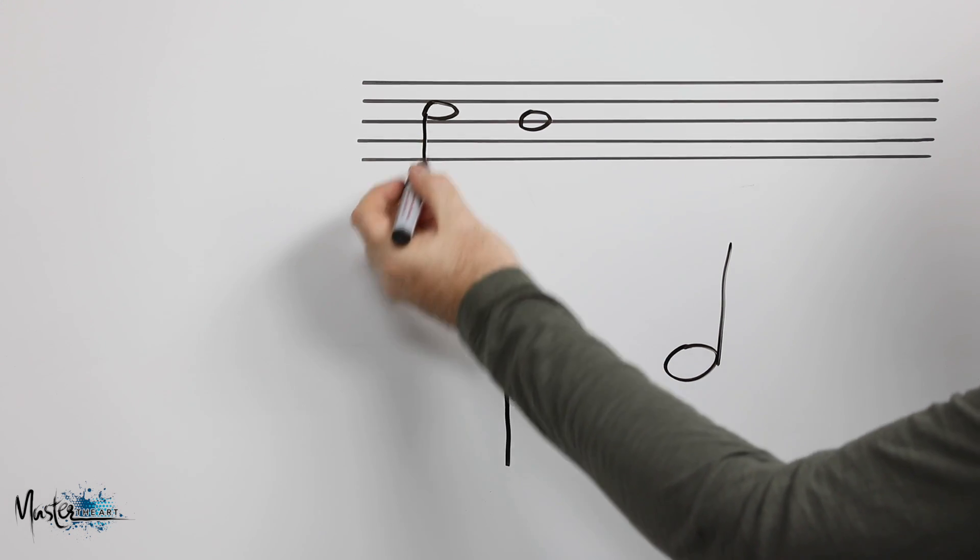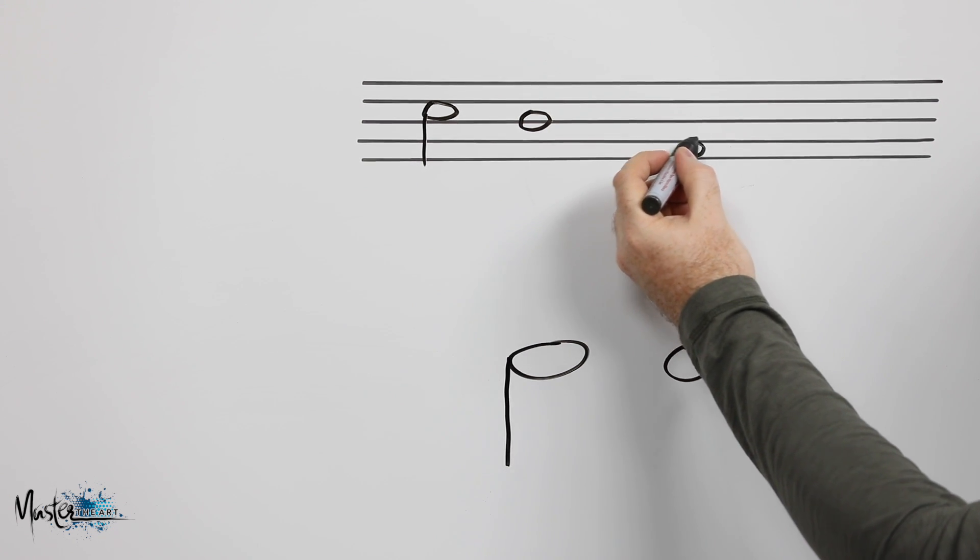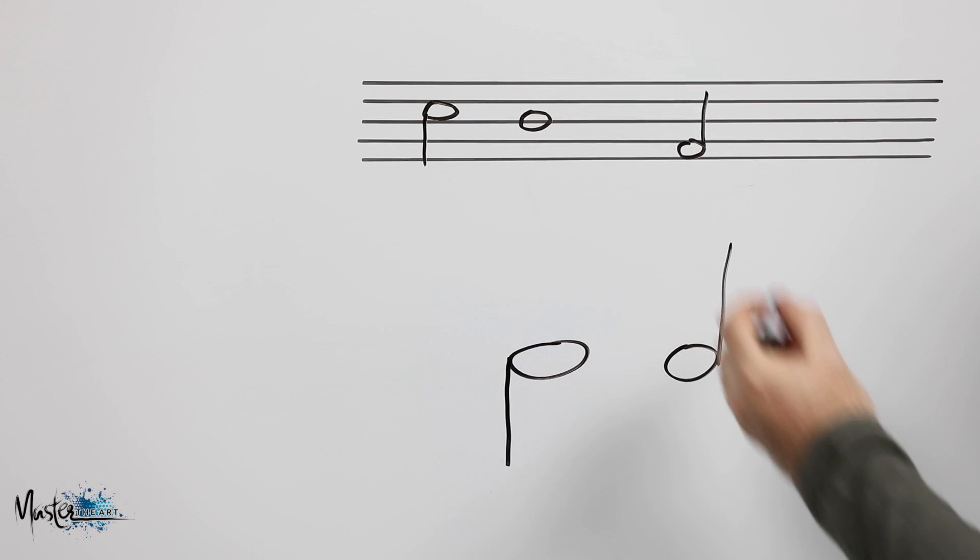Don't draw a really short one, don't draw a really long one, about what I've drawn there. If the note is below the middle, so if I draw one here, the stem should always go up to the right.